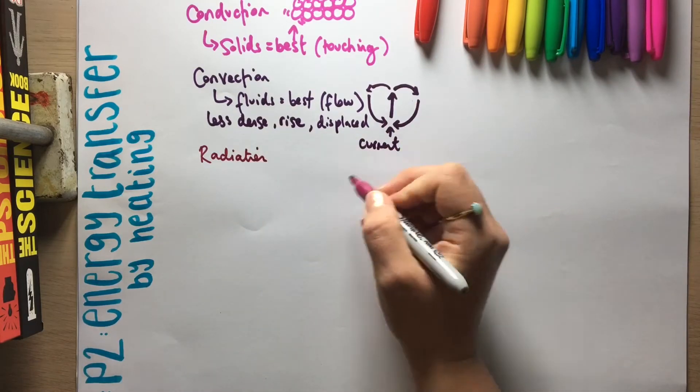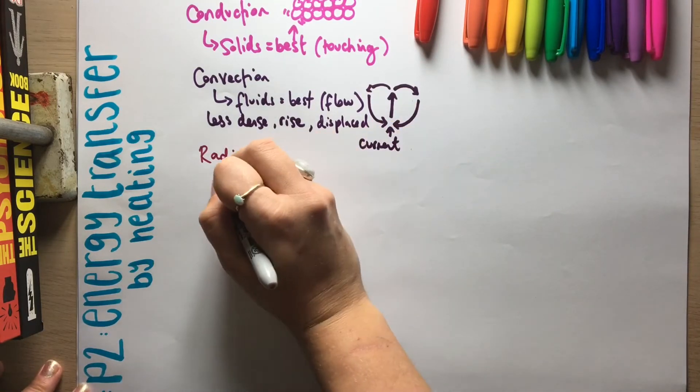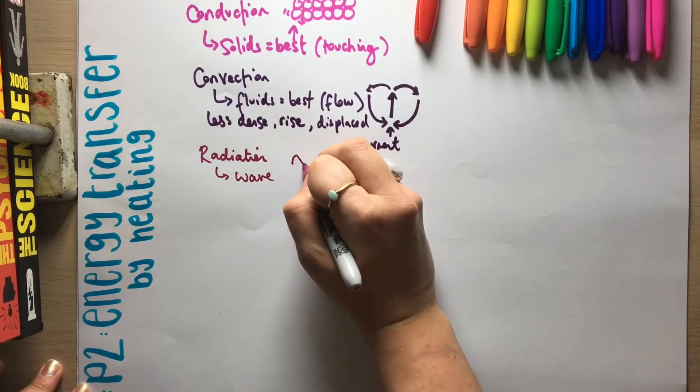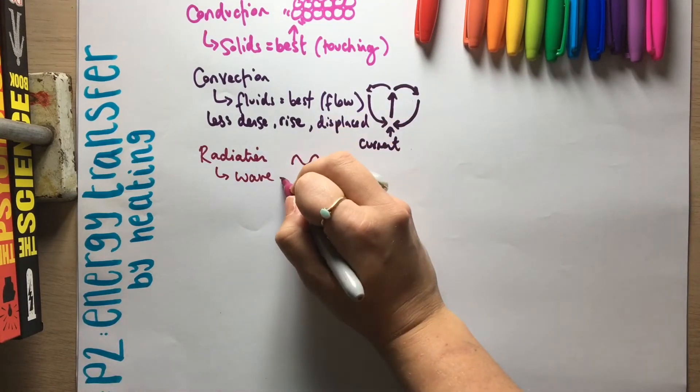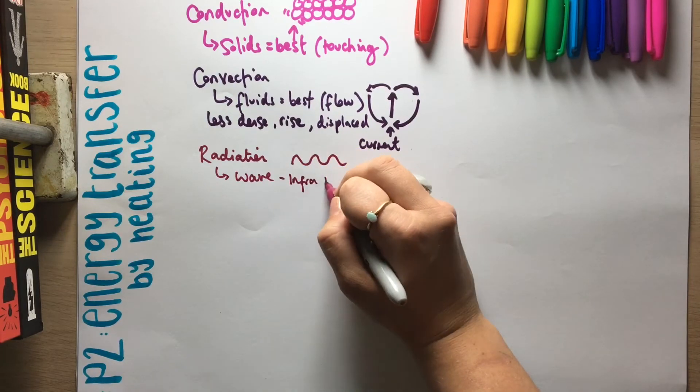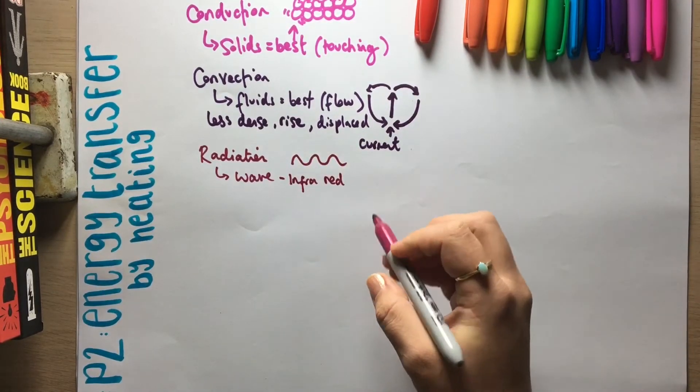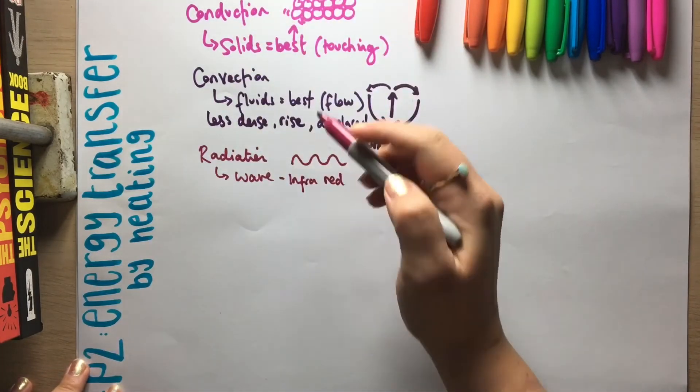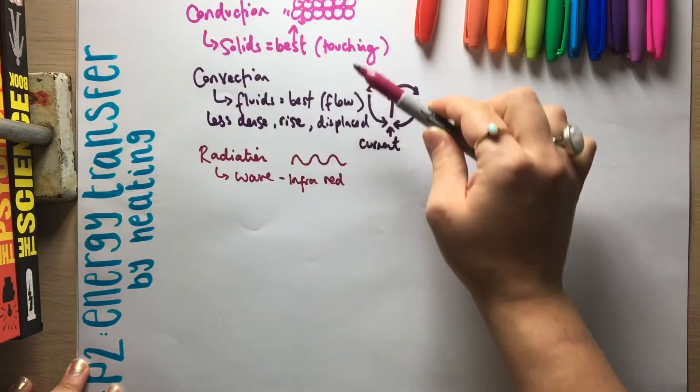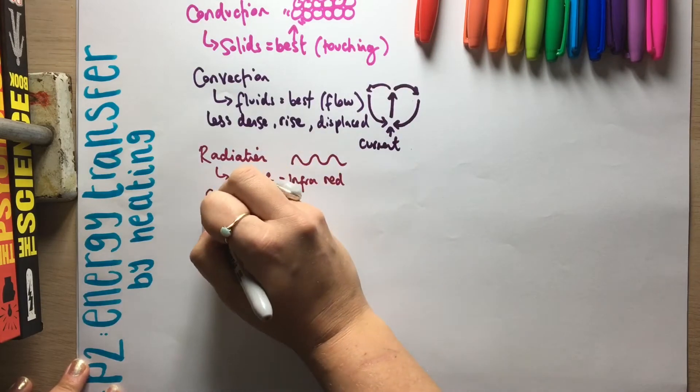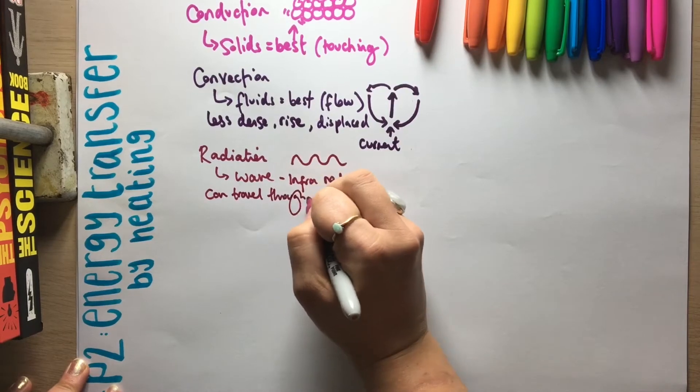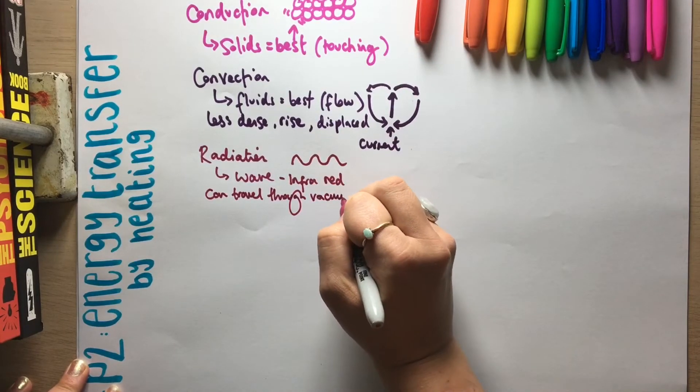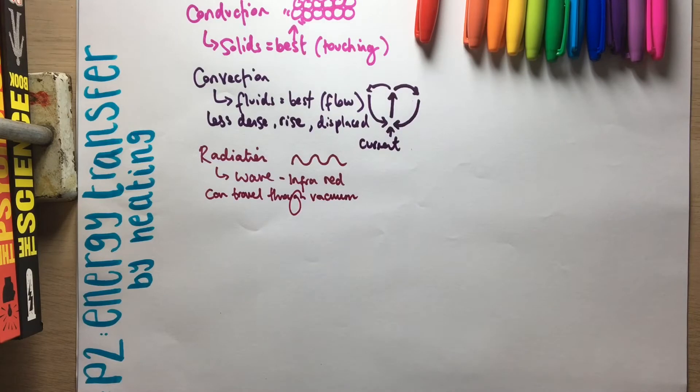So radiation is a wave. So it's electromagnetic radiation, infrared. And the special thing about radiation compared to convection and conduction: conduction and convection require particles, radiation can travel through a vacuum. So it doesn't need particles in order to transfer energy by radiation.